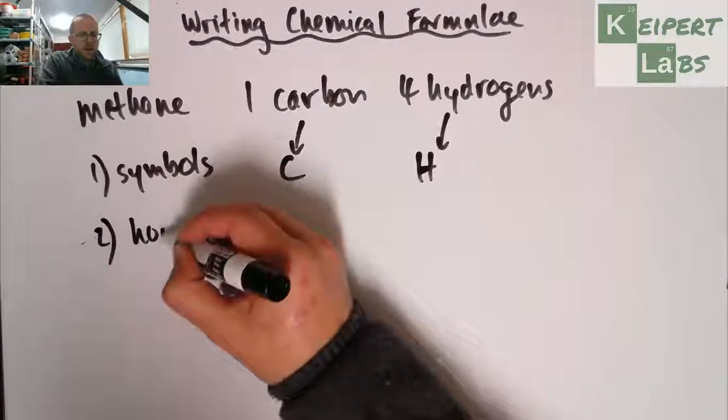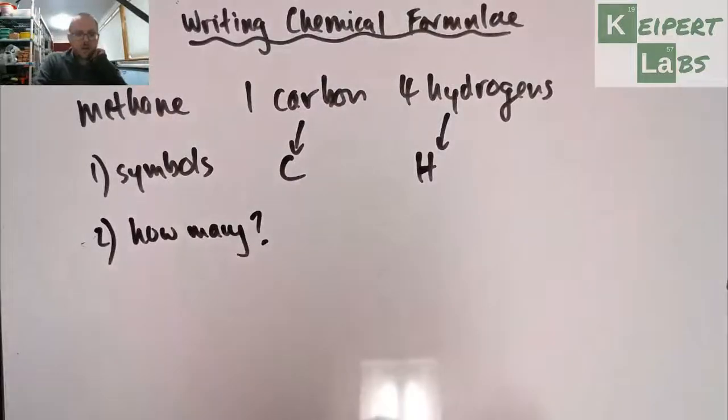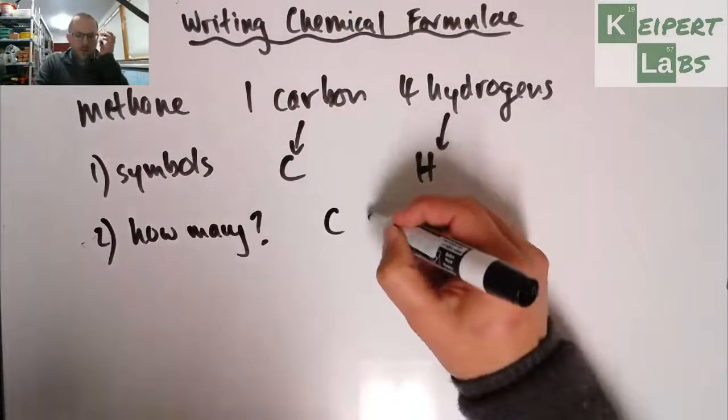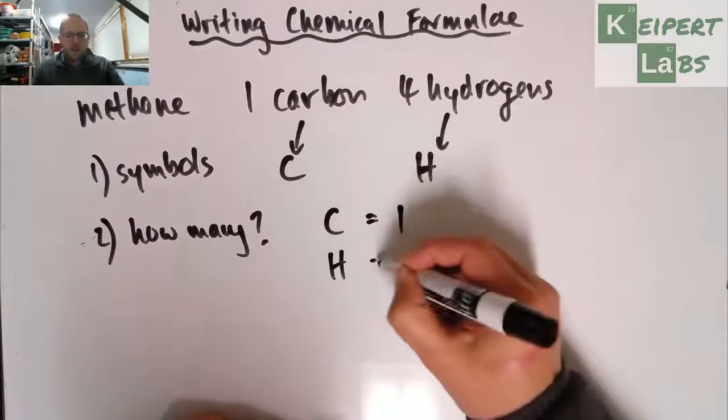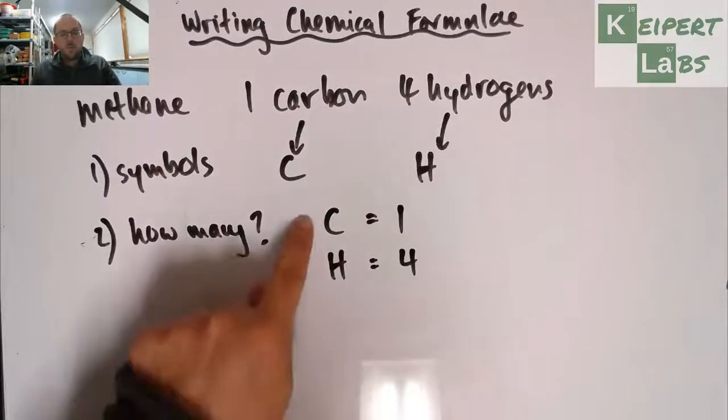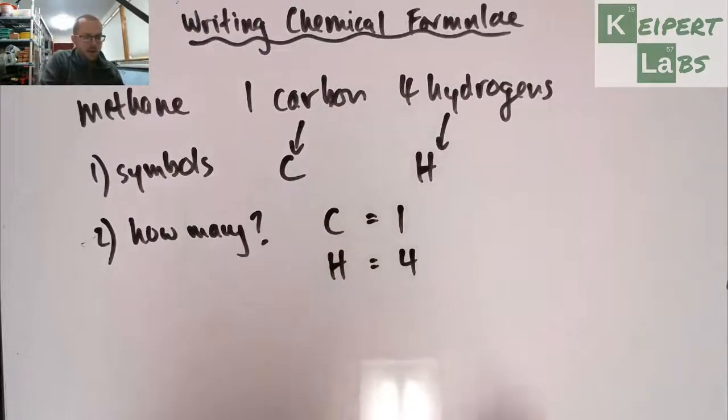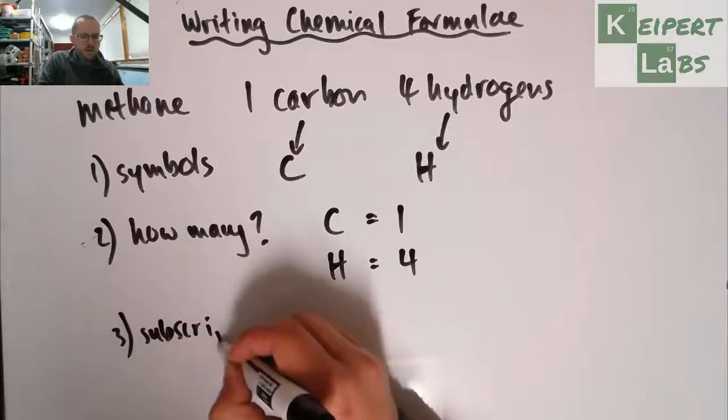So these are some of them you'll remember, others you might need to look at the periodic table to remind you. Okay. So it's always good to have one of those handy. Okay. And now we need to look at how many I have of each. Okay. So for carbons, I'm told I've got one. Okay. Looking at my information and my hydrogens, I'm told I have four. Okay. So I'm going to have a C and an H and I'm going to have a one and a four in there somewhere.